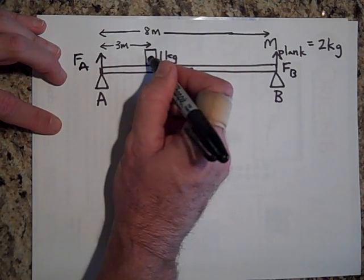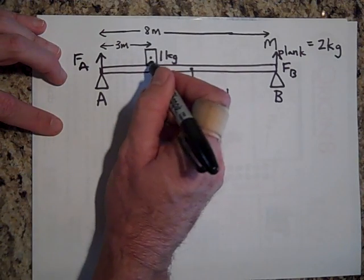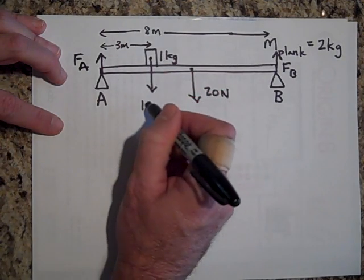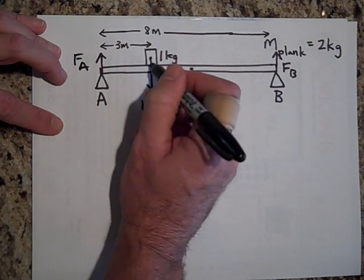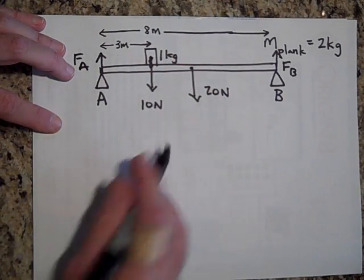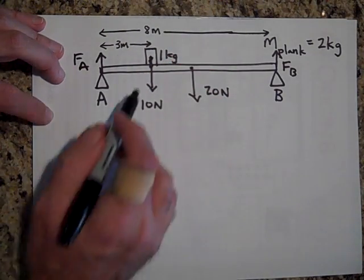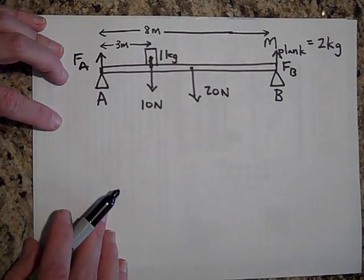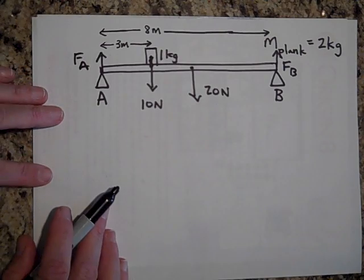And then there's this box that is one kilogram that's pushing down with 10 newtons. So it's actually, I should have put it right here. That's 10 newtons downward. I'm not drawing a force diagram of the mass. I'm just drawing it of the plank.